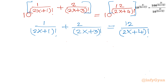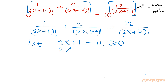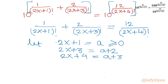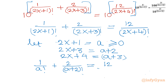Now we use substitution. Let 2x+1 equal a. The condition on a is that it should be greater than or equal to 0 and must be an integer. Then 2x+3 becomes a+2, and 2x+4 becomes a+3. So our equation becomes: 1 over a! plus 2 over (a+2)! equal to 12 over (a+3) factorial.